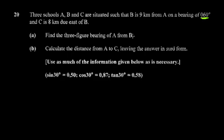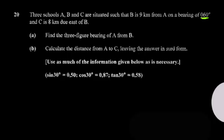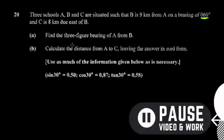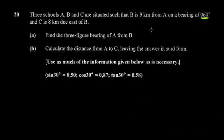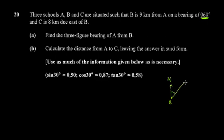To solve this, you actually draw the diagram based on this information — you're just dealing with trigonometry. You can start by placing point B, then draw cardinal north. The bearing is 60 degrees, so B is nine kilometers from A at 60 degrees.